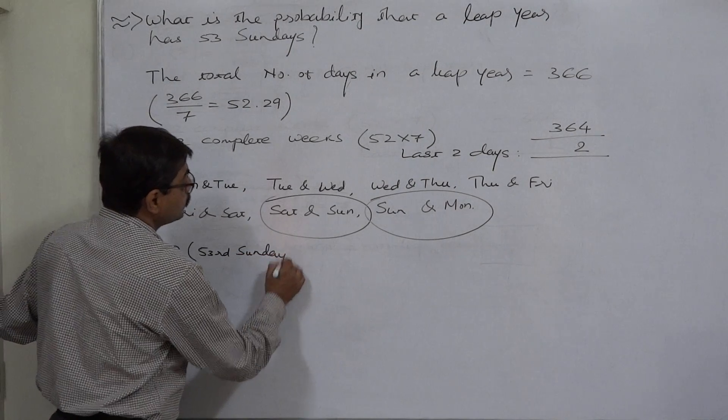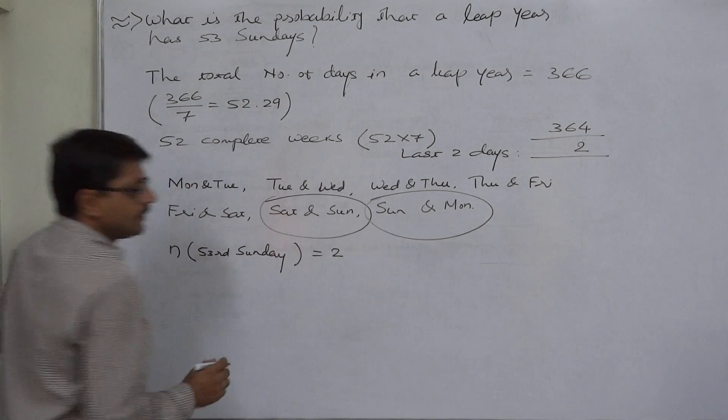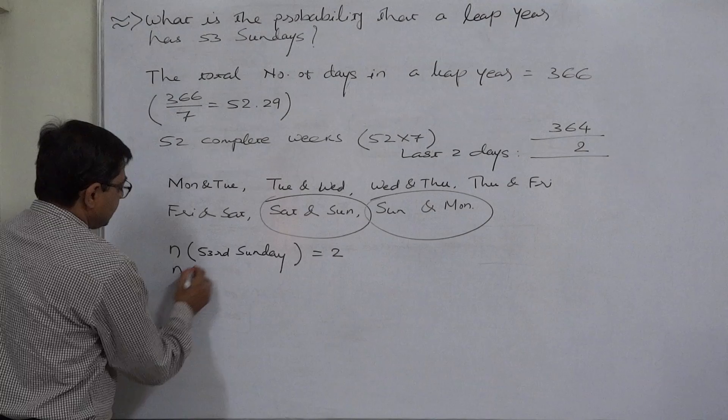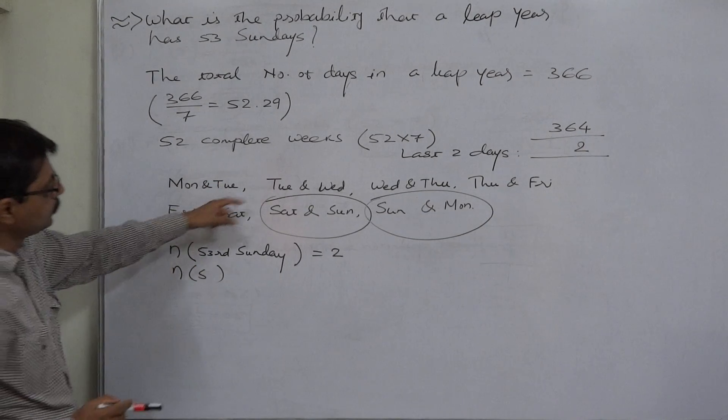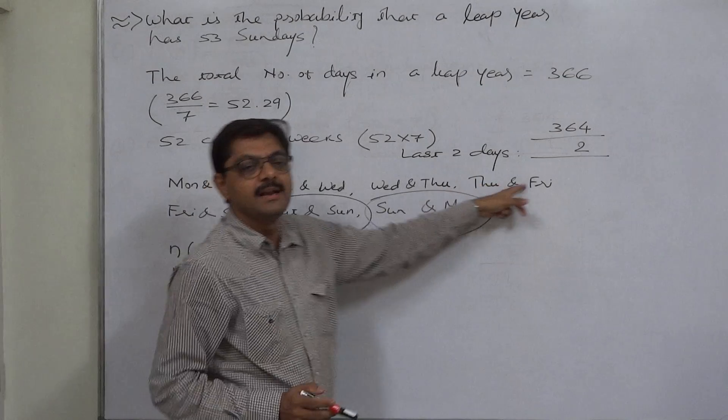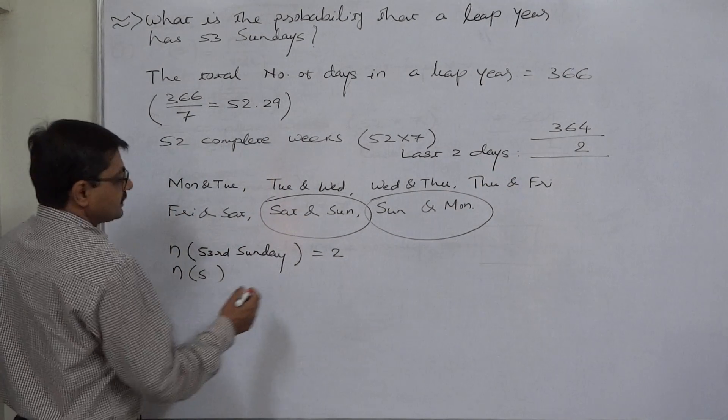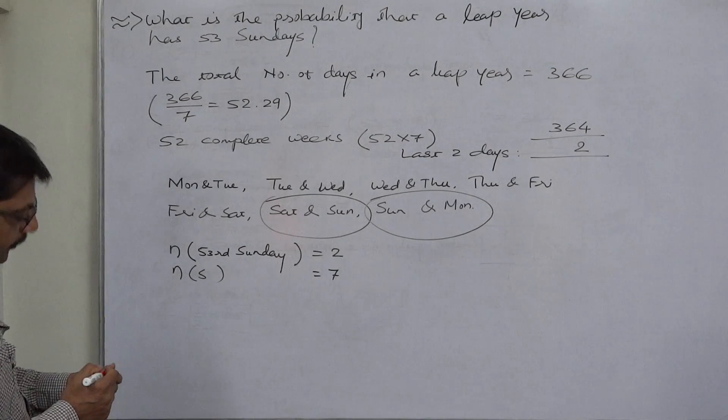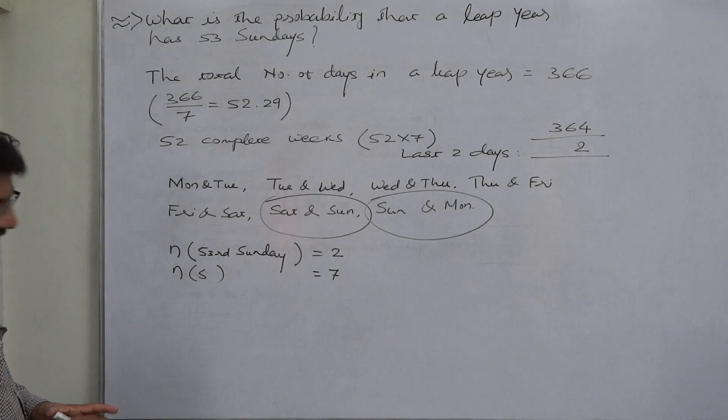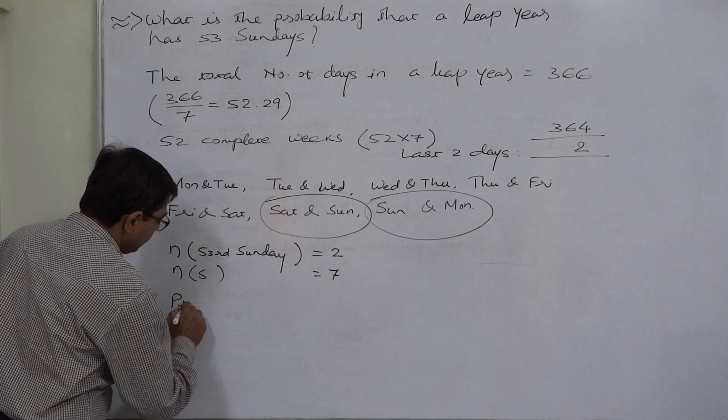And total sample space is how many pairs are there? One, two, three, four, five, six, and seven. There are seven cases possible, or seven pairs of two consecutive days are possible.